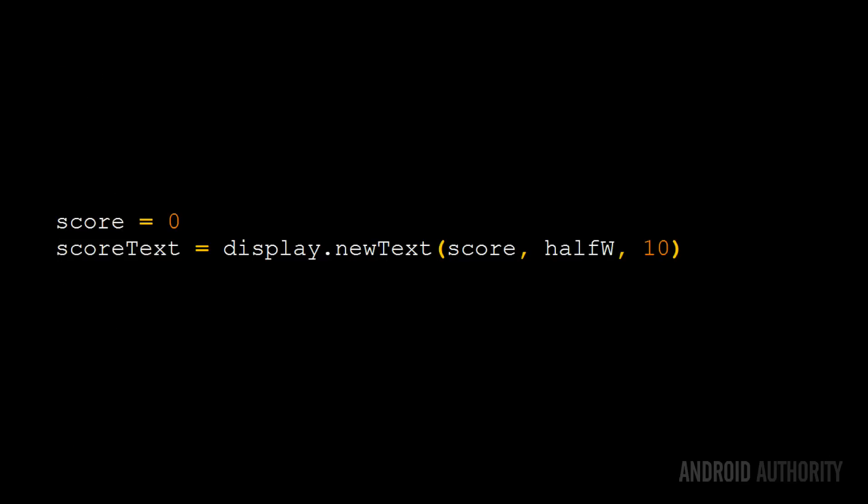Since the user will score points for tapping on balloons, we need to initialize a score variable and display the score on the screen. The score will be kept in a variable called score, and score_text is the object which displays it. Like newImage, newText puts something on the screen — in this case text. Since score_text is a global variable, we can change it from anywhere in the code. You can now relaunch the emulator and see the score of zero displayed near the top of the screen.